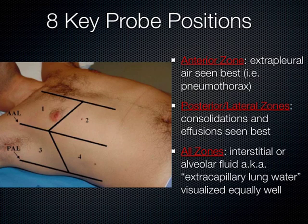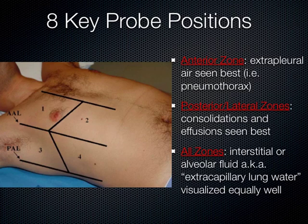Most patients you'll see in the hospital are lying down, so we primarily focus on the anterior because of gravity. If you're on your back for any length of time, any kind of fluid in your lungs will go to the back and you'll get false positives. Anteriorly is the best place to look for a pneumothorax — if you're supine and air has escaped from inside the lung into the pleural space, it's going to be anterior. Posterolaterally, we can best see effusions and consolidations, since those are gravity dependent.